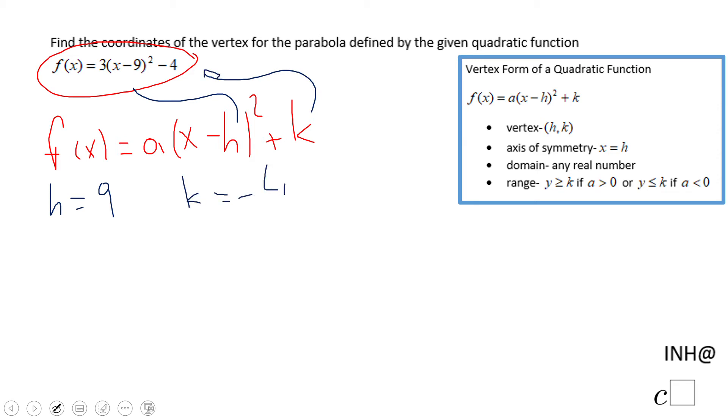Okay so the vertex of this quadratic is 9 and negative 4.